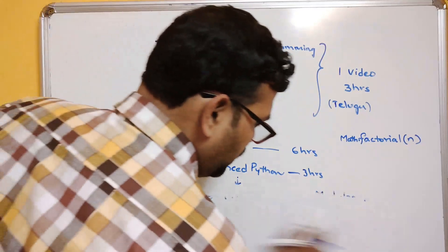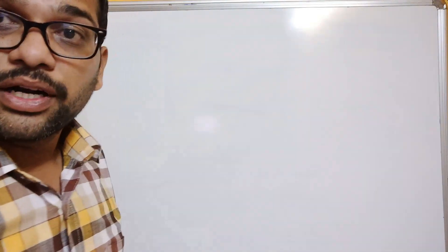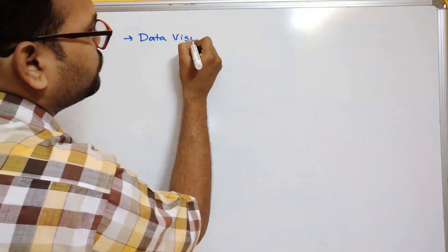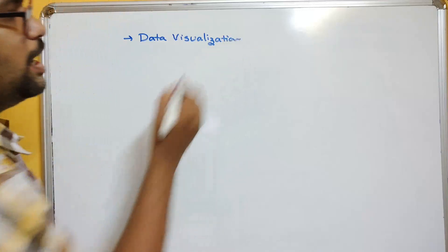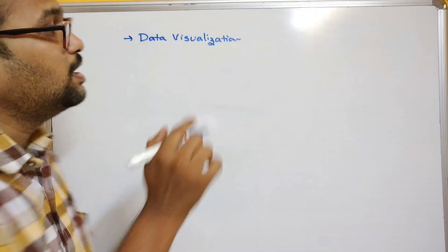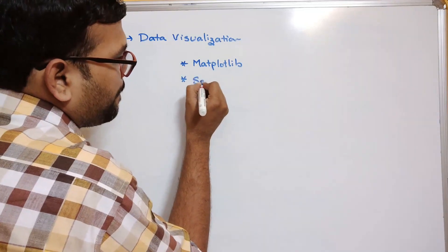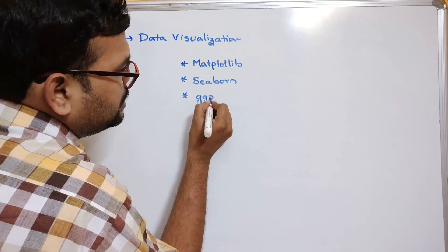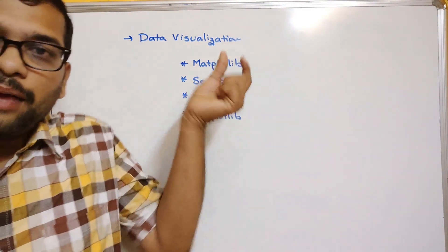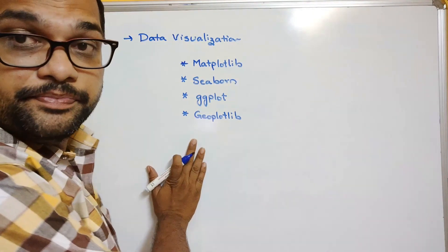Now let's look at the types of libraries by application. First, for data visualization — representing data using graphs and charts — the major libraries are: matplotlib, Seaborn, ggplot, and Geoplot. There are many more, but these are the major ones used for data visualization.